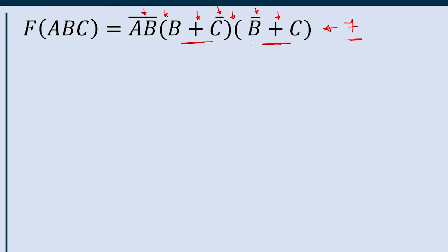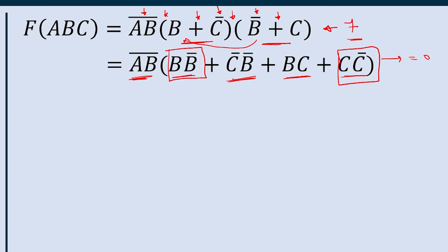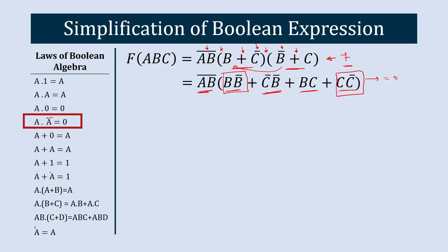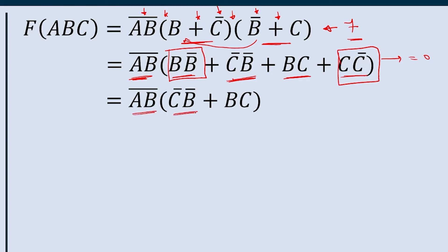In step one we multiply two terms. Multiplying them out: A·B-bar stays, B-bar·B gives B·B-bar, then B-bar·C, and B·C gives C·C-bar. Here C·C-bar equals 0 and B·B-bar equals 0 by the complement law. Setting those zero terms aside, we get A·B-bar·(C-bar·B-bar plus B·C).